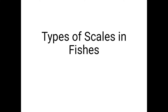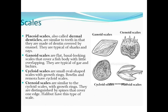Good morning friends. Here we study the types of scales in fishes. There are four types of scales which are found in fishes for protection: placoid scales, ganoid scales, cycloid scales, and ctenoid scales.